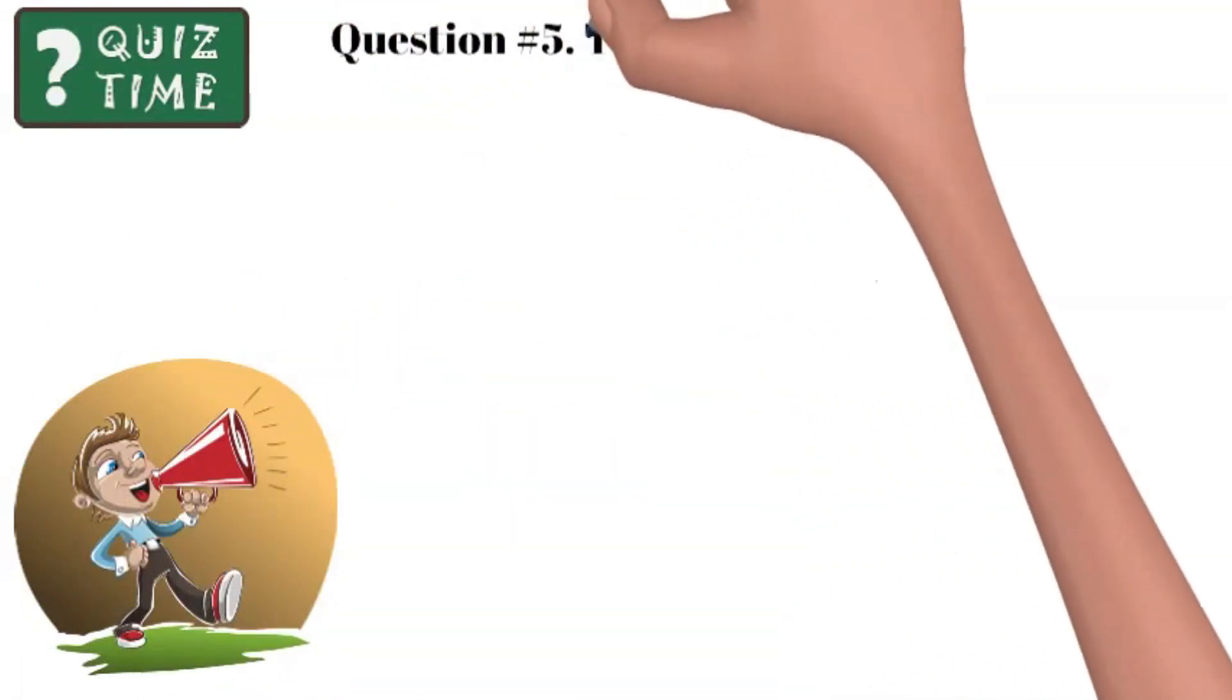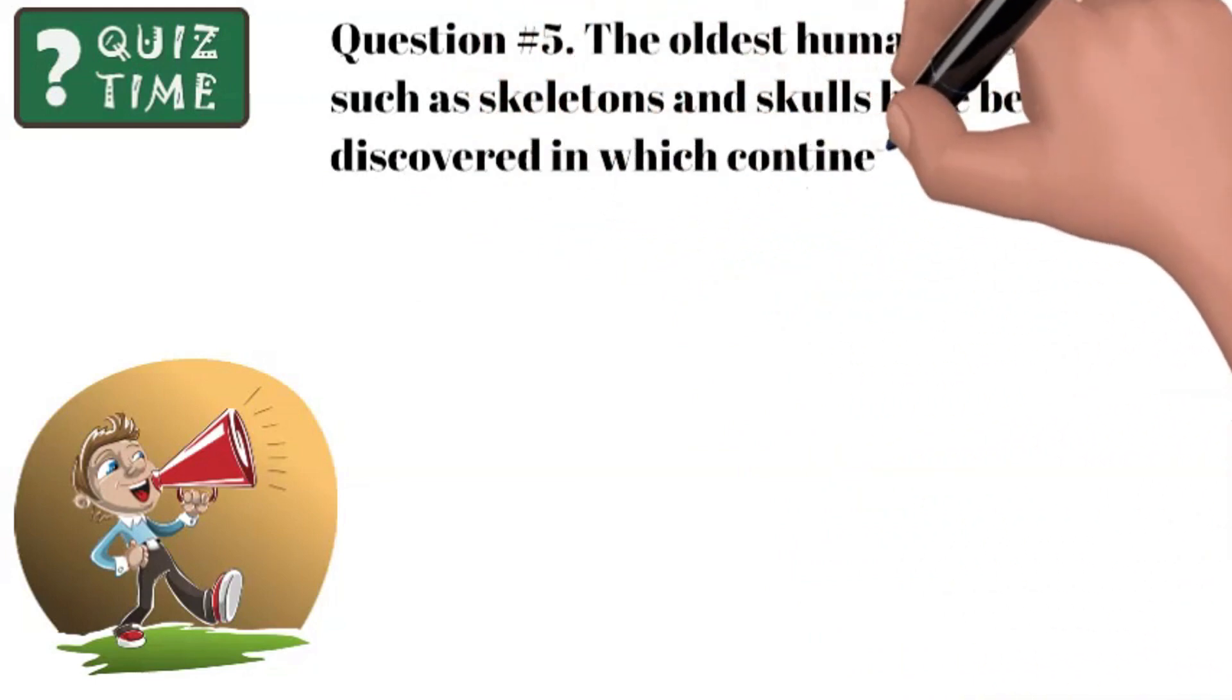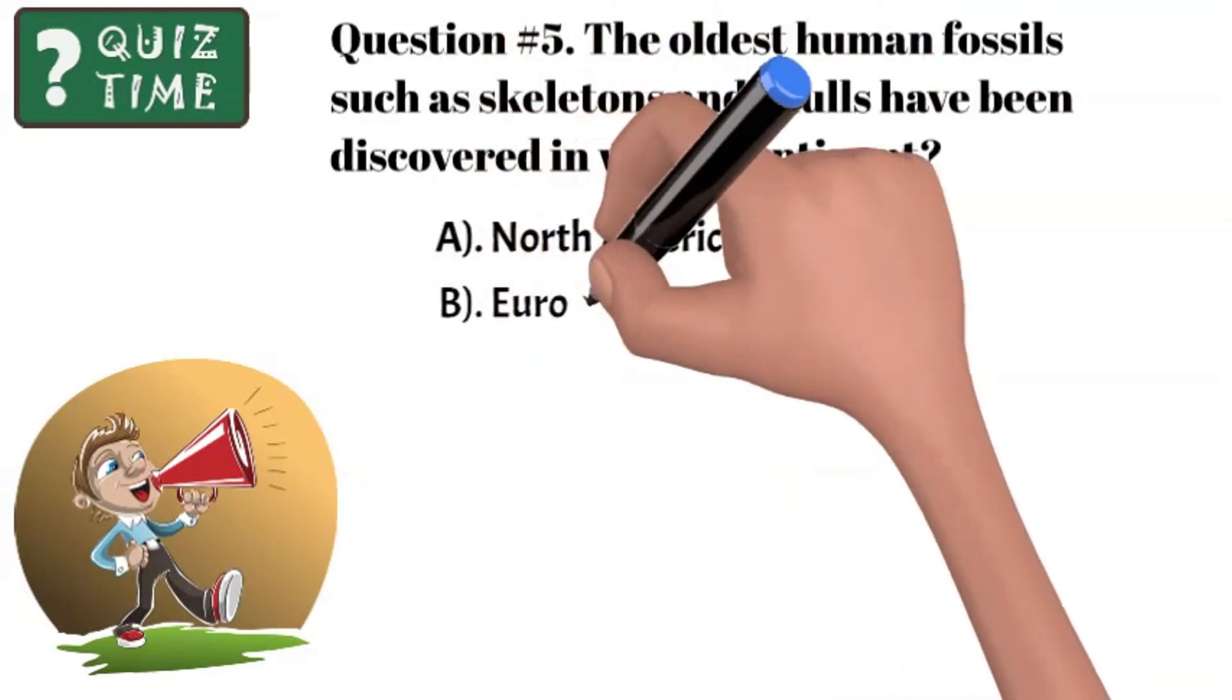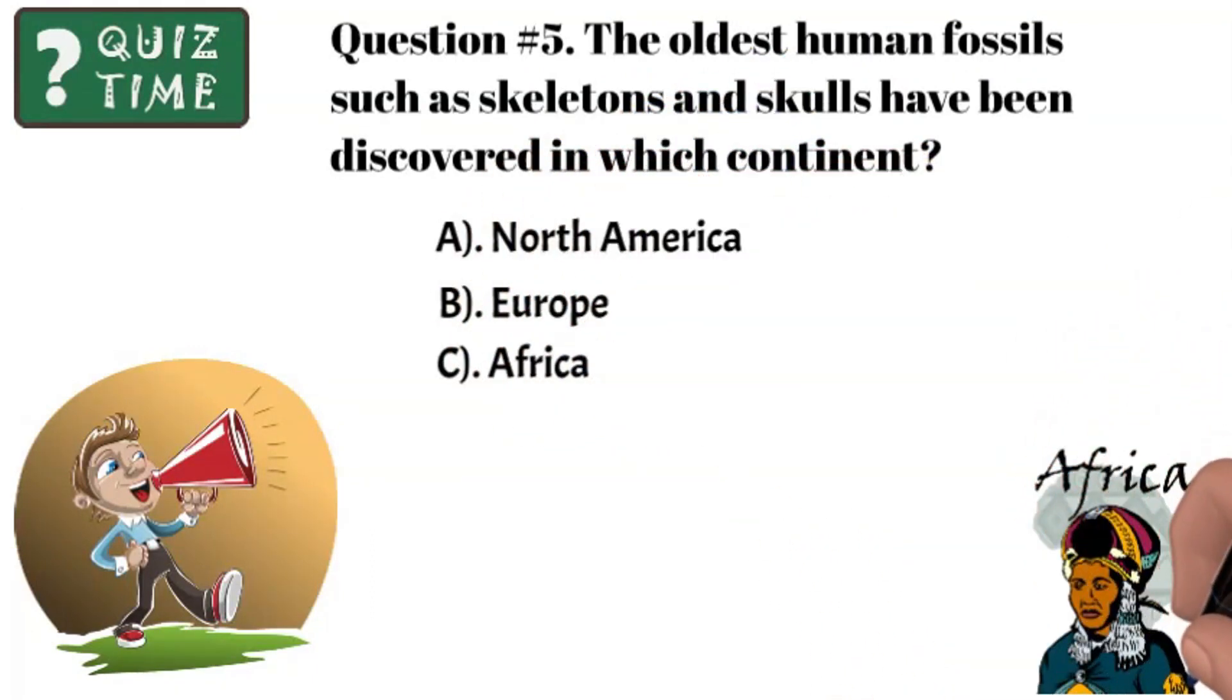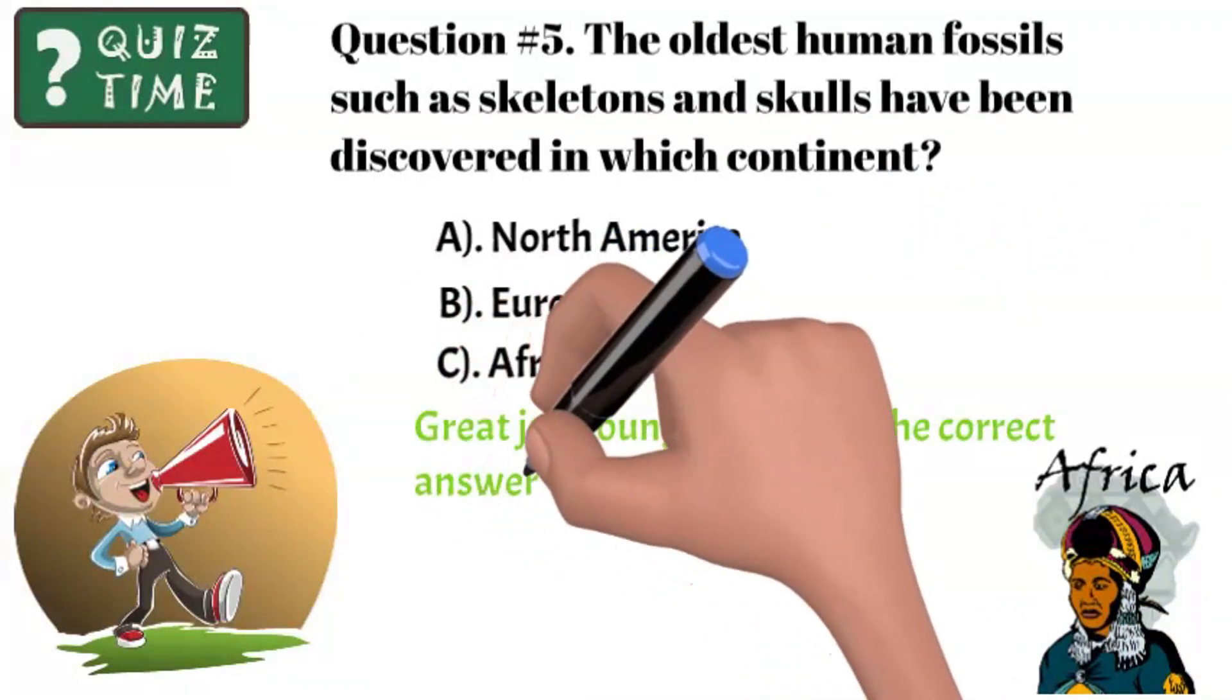Question number five: The oldest human fossils such as skeletons and skulls have been discovered in which continent? A, North America? B, Europe? C, Africa? Great job young travelers. The correct answer is C, Africa.